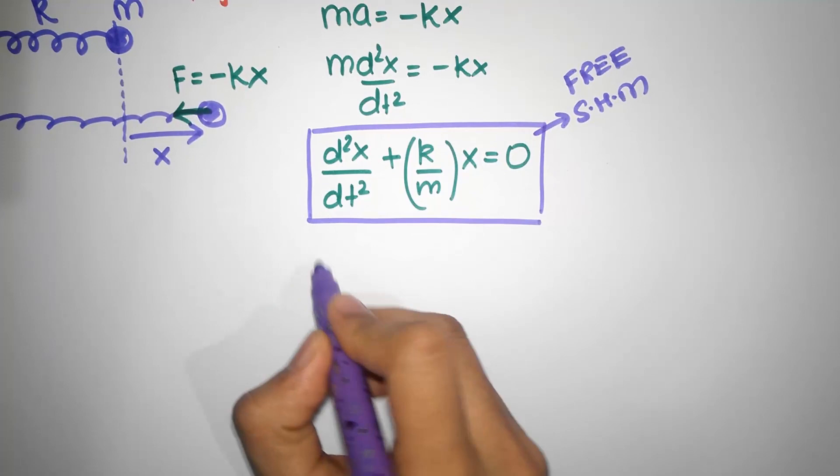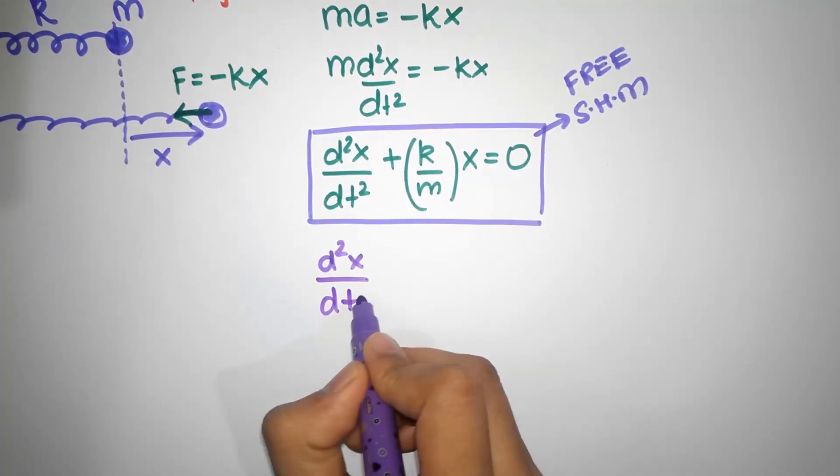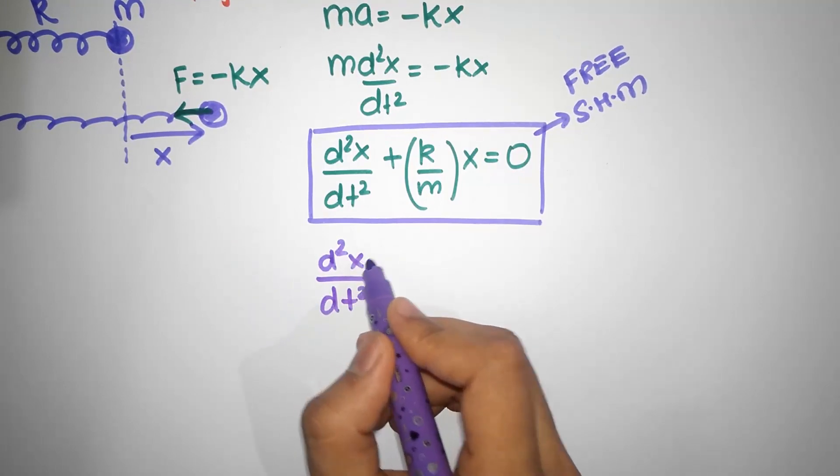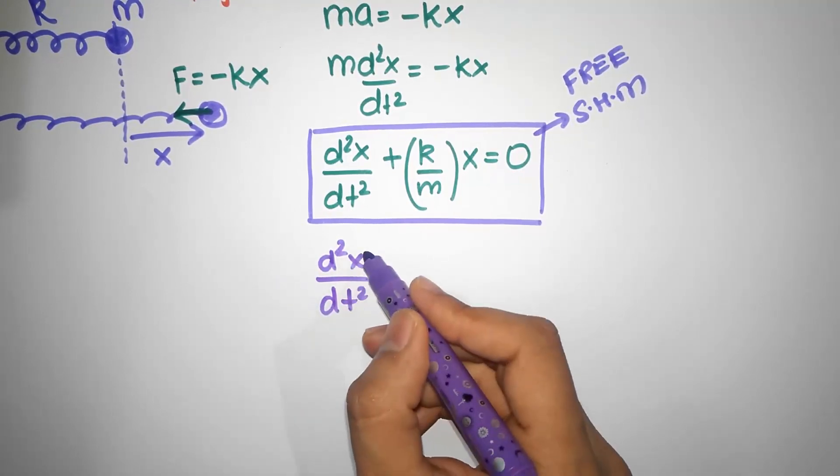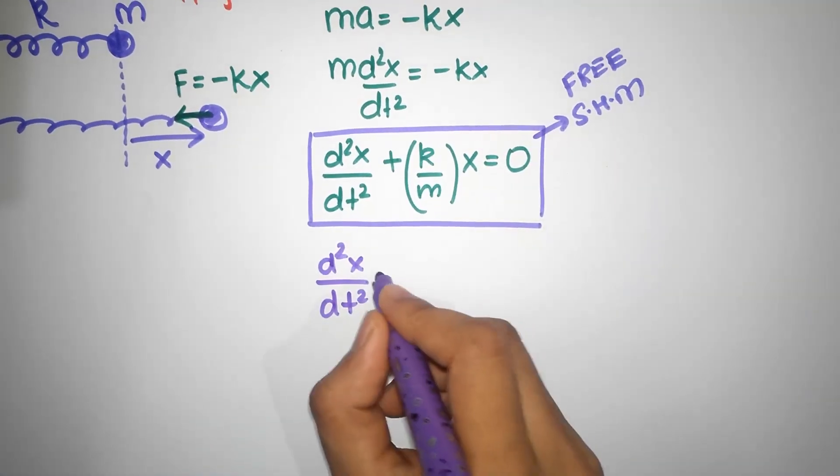I'm going to write down the general equation for free oscillations. General equation for free SHM is always going to be of the form D square X by DT square. This doesn't have to be X, it can be Y, it can be theta, it can be anything. It can be even a charge or a voltage or velocity or acceleration, anything you want.